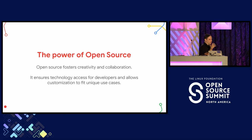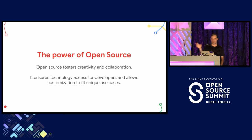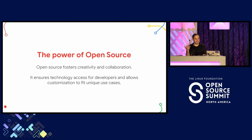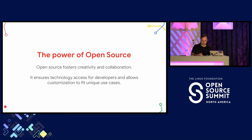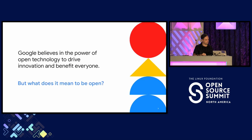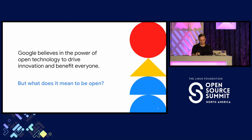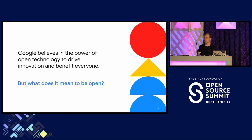Everybody in this room knows the power of open source. We all know that these licenses give users creative autonomy to drive creativity and collaboration, and also that it can be modified to fit custom and unique use cases. Google believes in the power of open technology, but what does it mean to be open? We know from the open source definition that open source should allow derivative works and innovation from first principles.